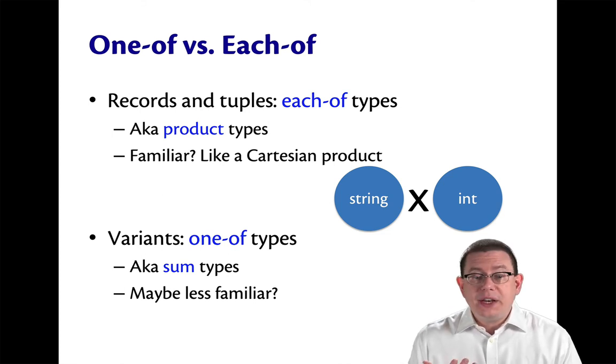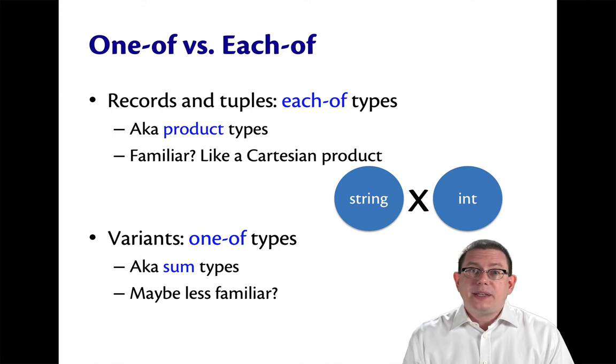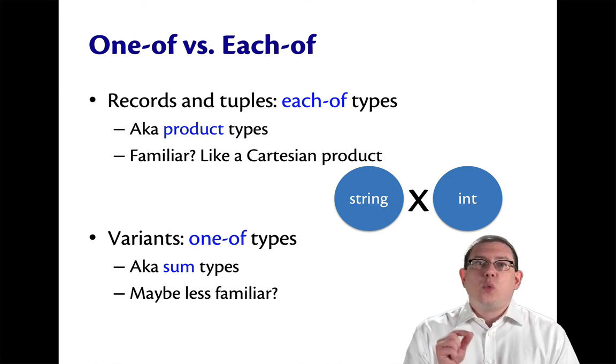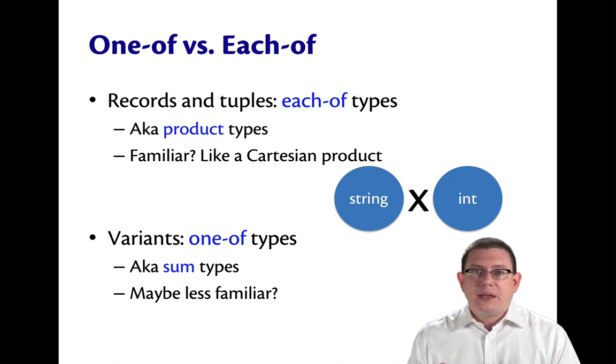Variants are known as one of types because any value of a variant is one of a set of constructors. A shape has to be exactly one of a circle or a rectangle or a point.